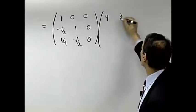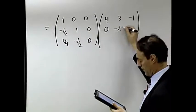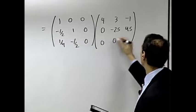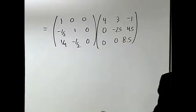Zero, zero, times four, three, negative one, zero, negative two-point-five, four-point-five. And when I do this out, I get zero, zero, eight-point-five. Okay. There it is. There's my L, and there's my U.